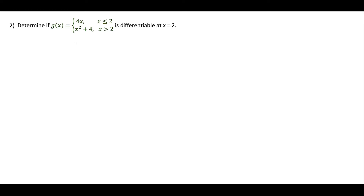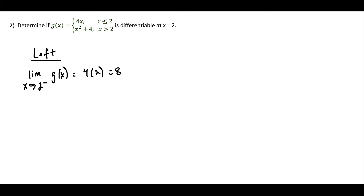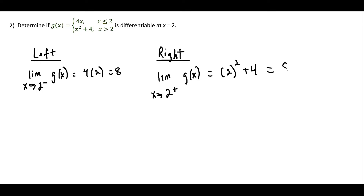For this next question, we're going to first show that this function is continuous, then show it's differentiable. For continuity, we look at the left-side limit: the limit as x approaches two from the left of g(x). Using the top portion of the function (x ≤ 2), that gives four times two, which equals eight. For the right-side limit, we use the bottom part: the limit as x approaches two from the right of g(x) equals two squared plus four, which also equals eight.